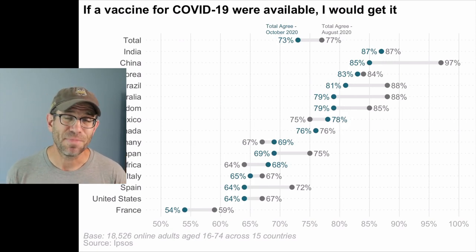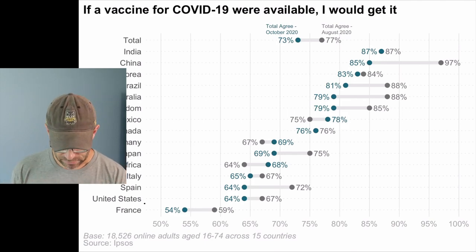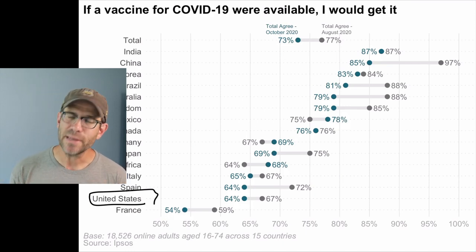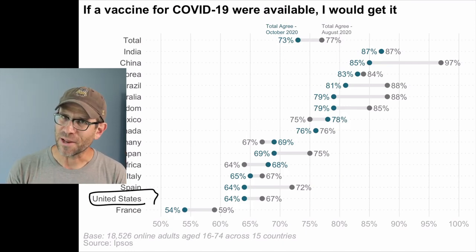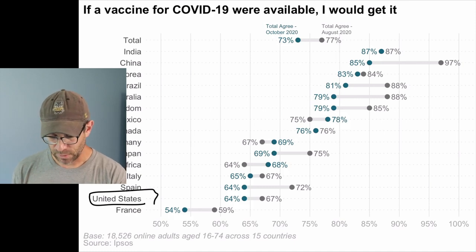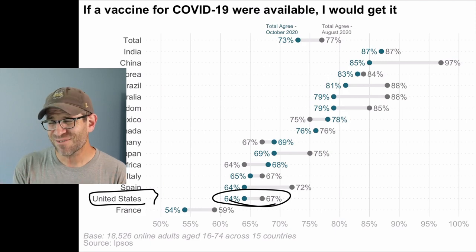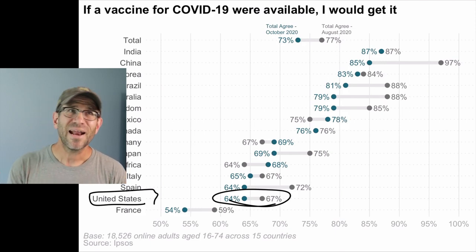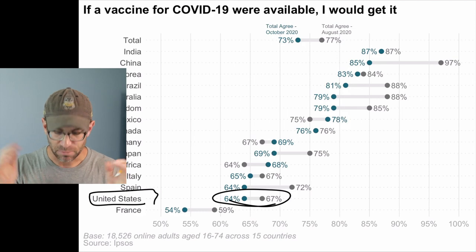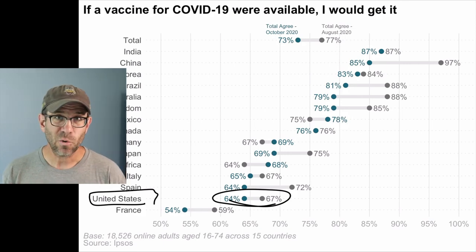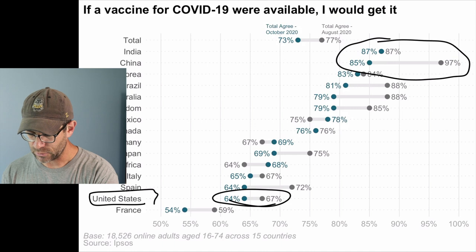When I looked at this figure for the first time, one of the first things I noted was: 15 countries, the US is in there — where is the US? I found that we were second to last, so we're not doing great but we're better than France at least. The other interesting thing is that we dropped about three percentage points, but that's probably within the margin of error — holding steady at about 64 to 67 percent, kind of high 60s.